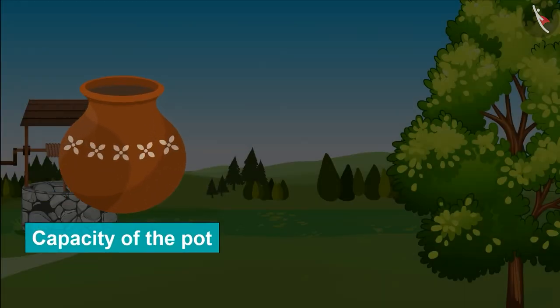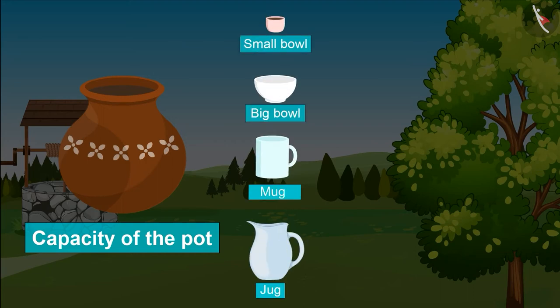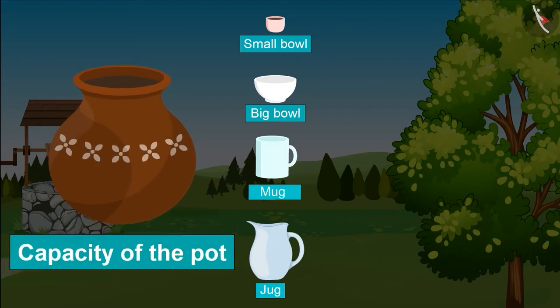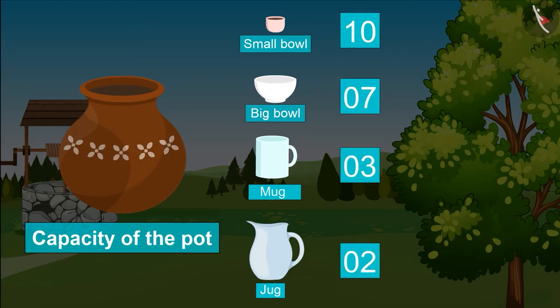Children, can you tell what the capacity of the pot was when we filled water from small bowl, big bowl, mug, and jug? Perfect! The capacity of the pot is ten small bowls, seven big bowls, three mugs, and two jugs.